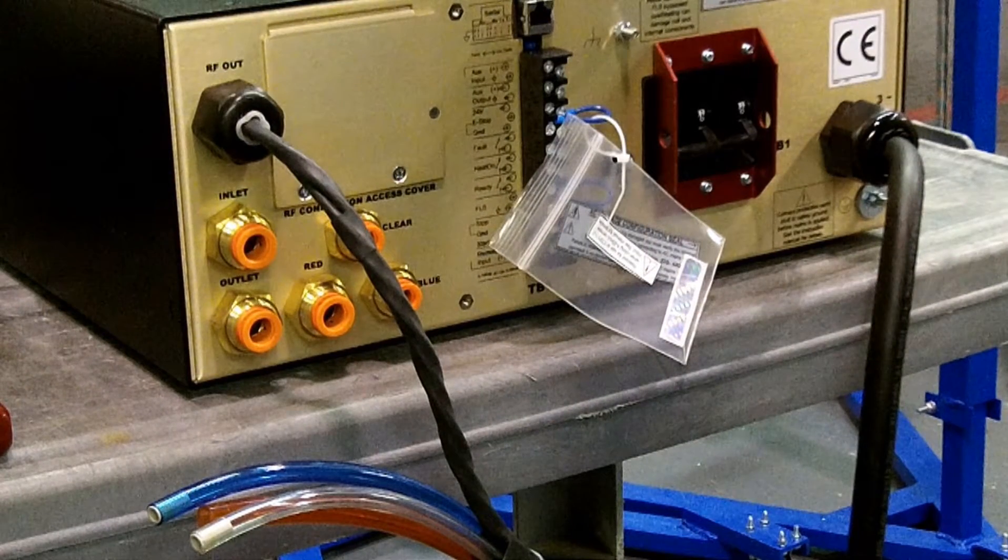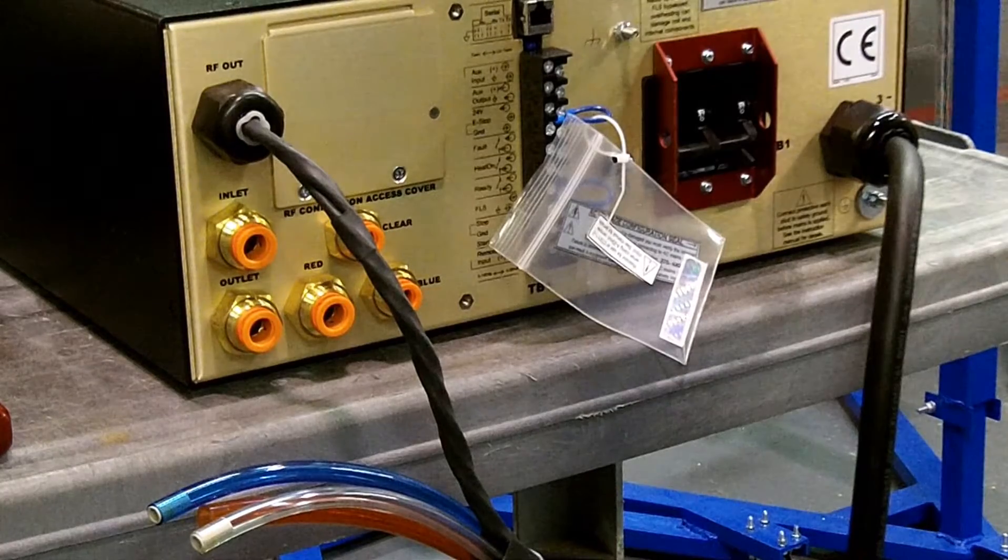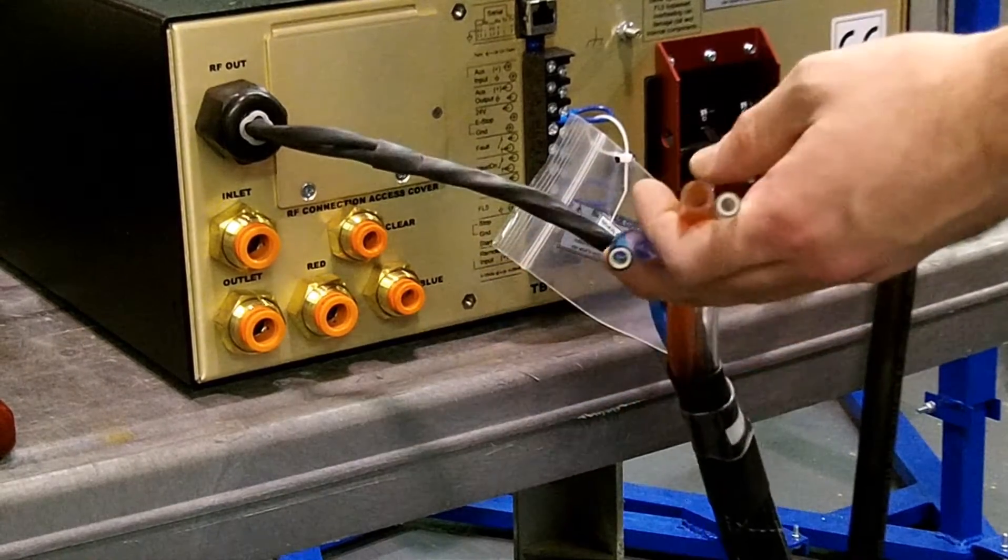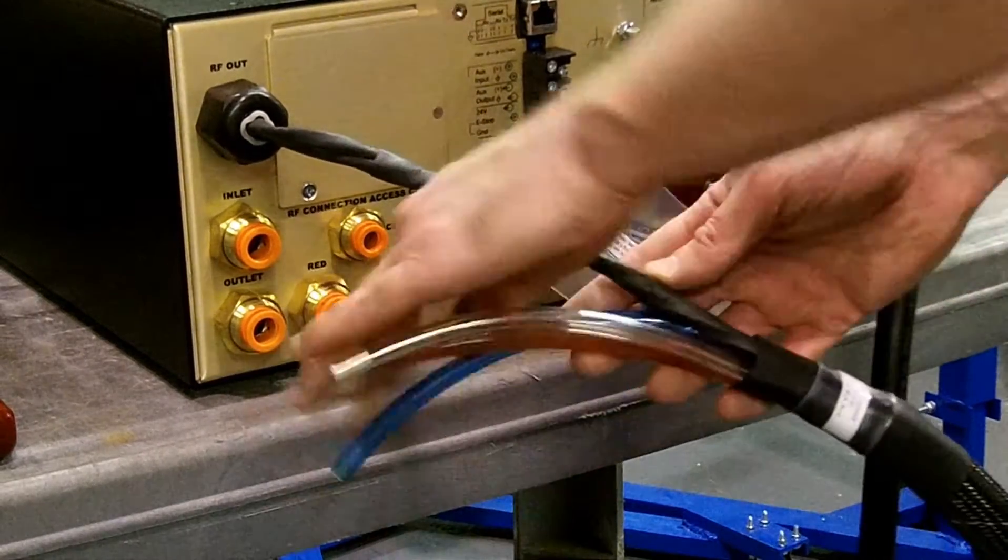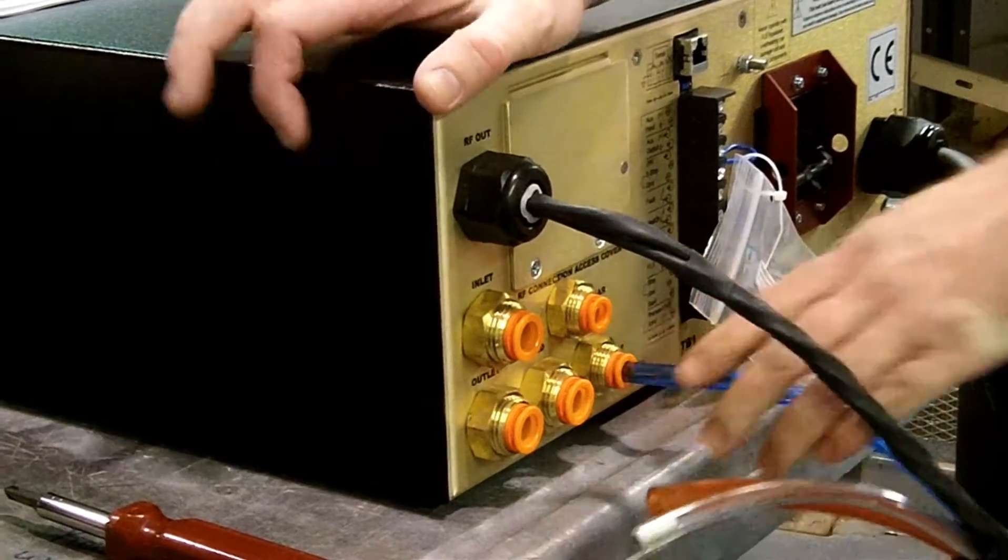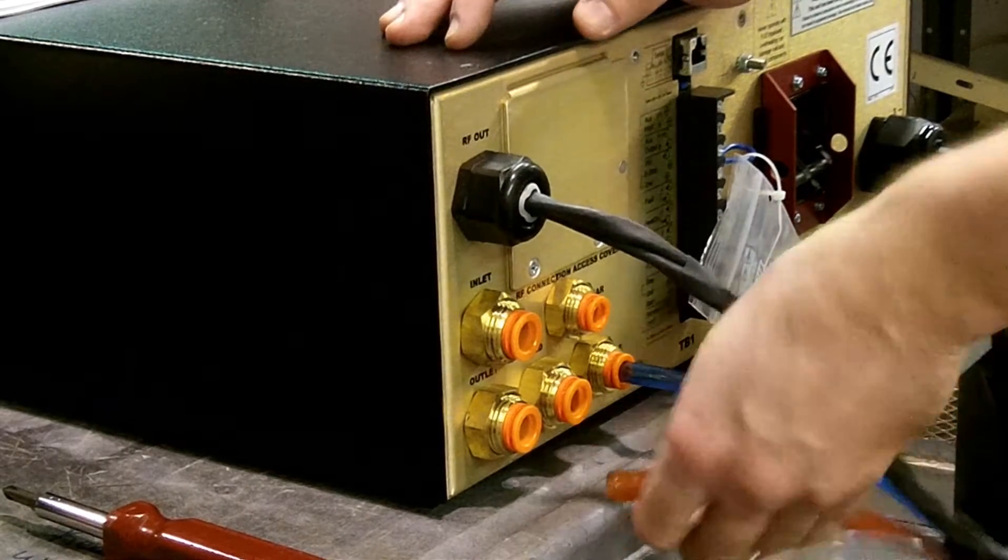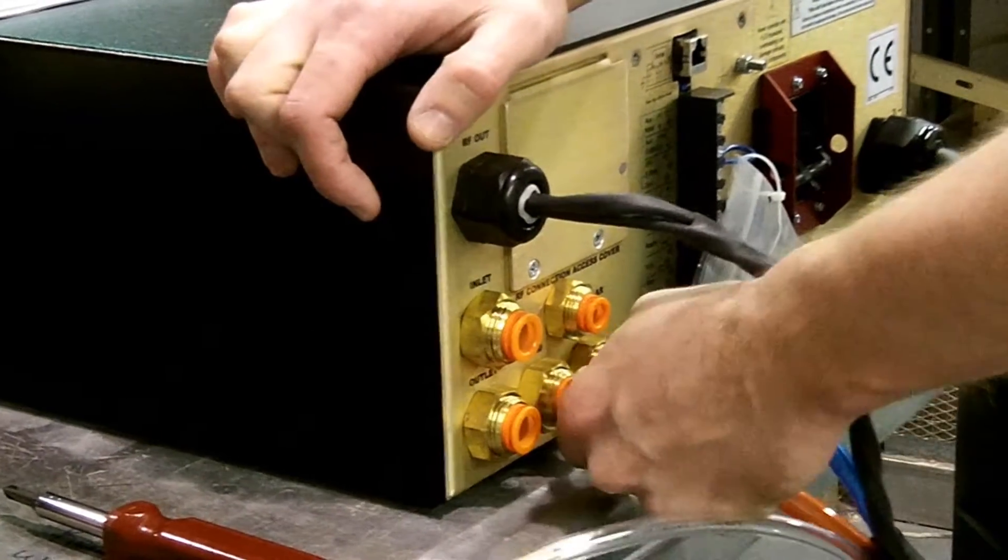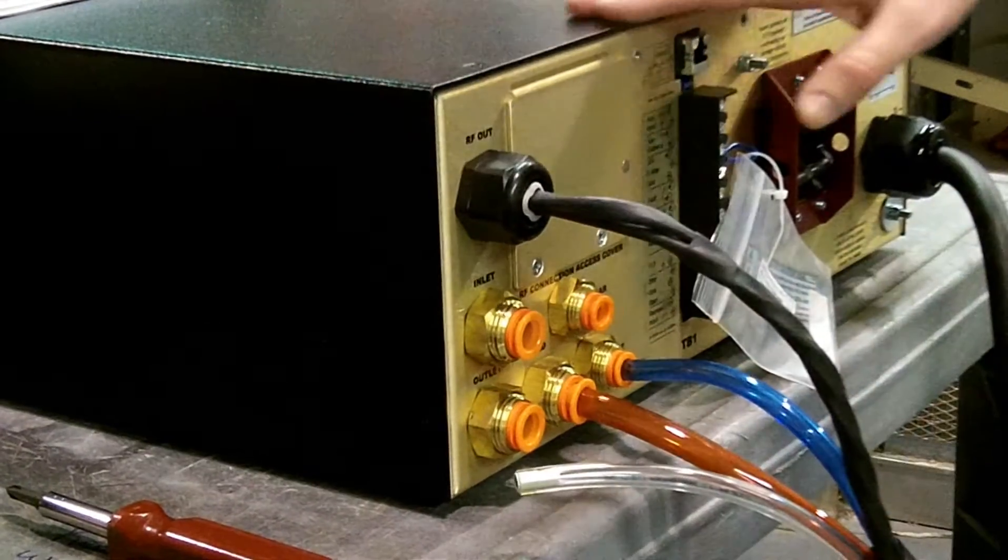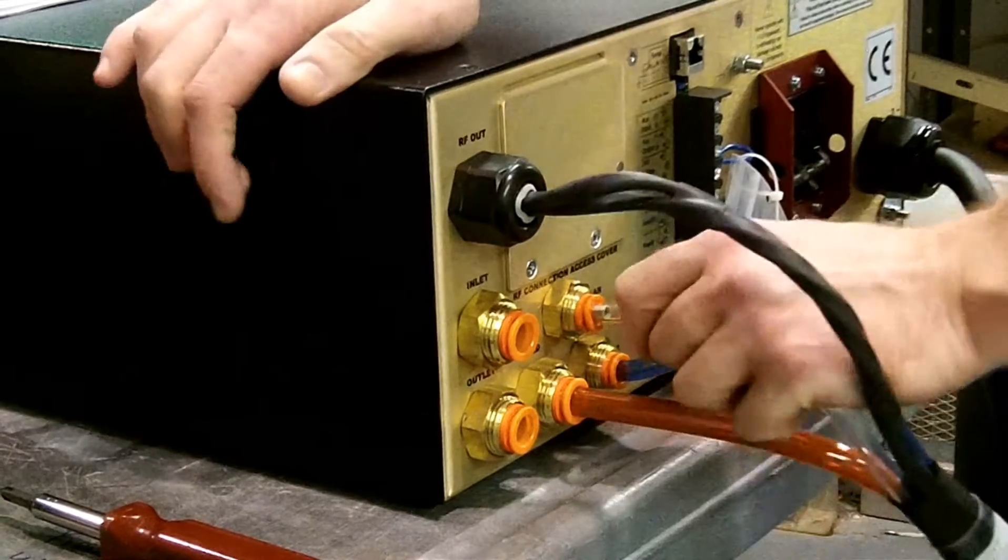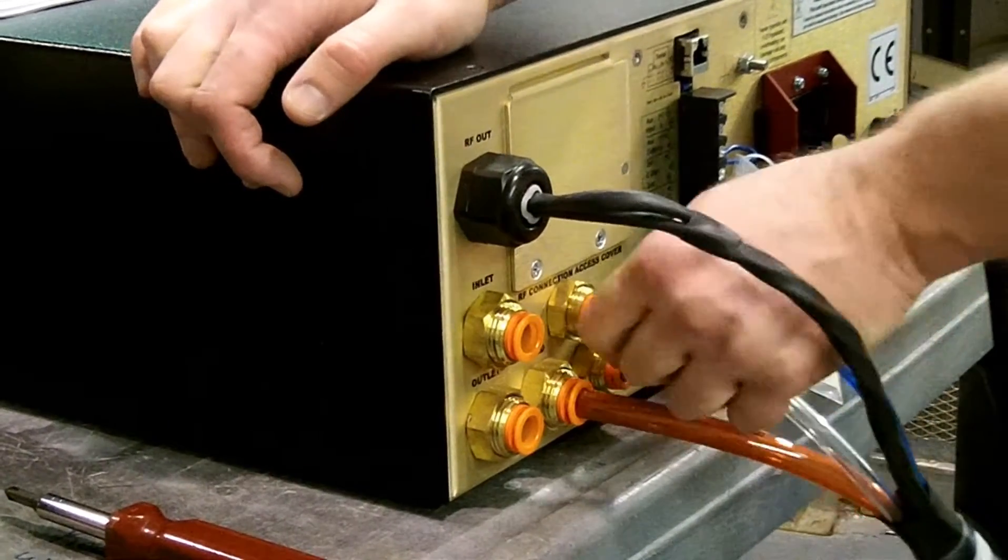Now, we need to attach the water connections. Locate the three colored tubes coming from the heat station. Now we're going to connect the blue colored tube to the corresponding blue inlet, the red tube to the red inlet, and the clear tube to the clear inlet. Make sure the tubes are connected firmly to the connectors. You can check this by pulling gently on the tubes once they are connected.